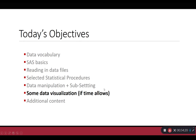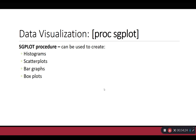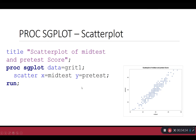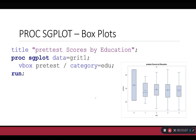Let's see some simple data visualization approaches. PROC SGPLOT is a very useful procedure — SG stands for statistical graphing. SGPLOT can be used to create histograms, scatter plots, bar graphs, and box plots. I would have PROC SGPLOT data equals GRIT1 and create a histogram of the pretest score. I can also create a scatter plot by telling SAS which variable I want on the x-axis and which on the y-axis. I can also create vertical box plots using the VBOX statement, and if I want a vertical box plot for each category, I add slash category equals edu.